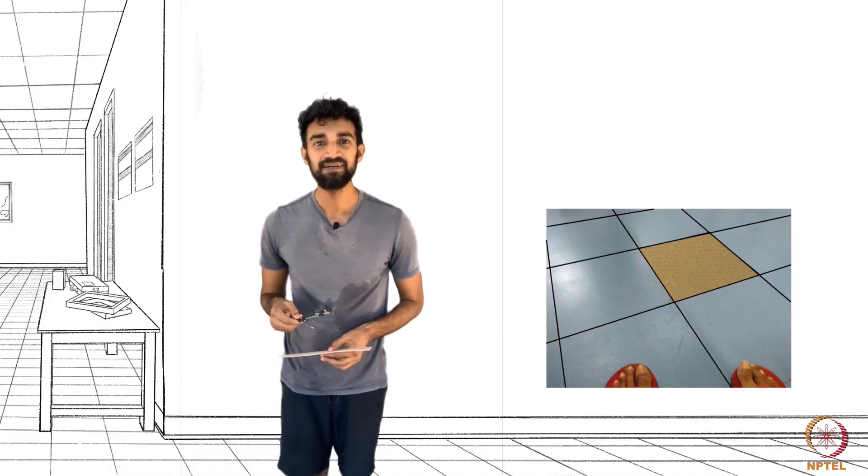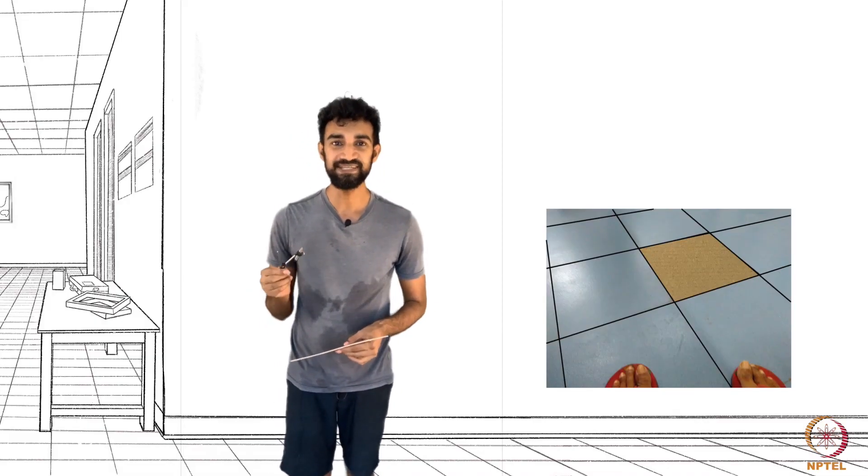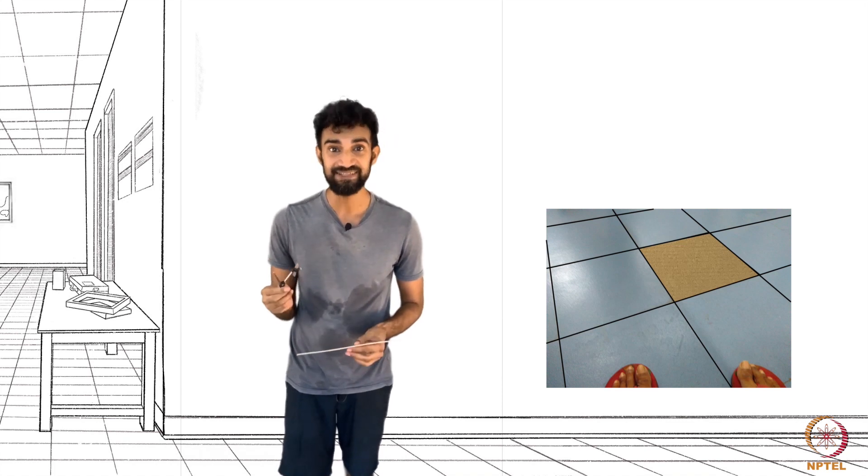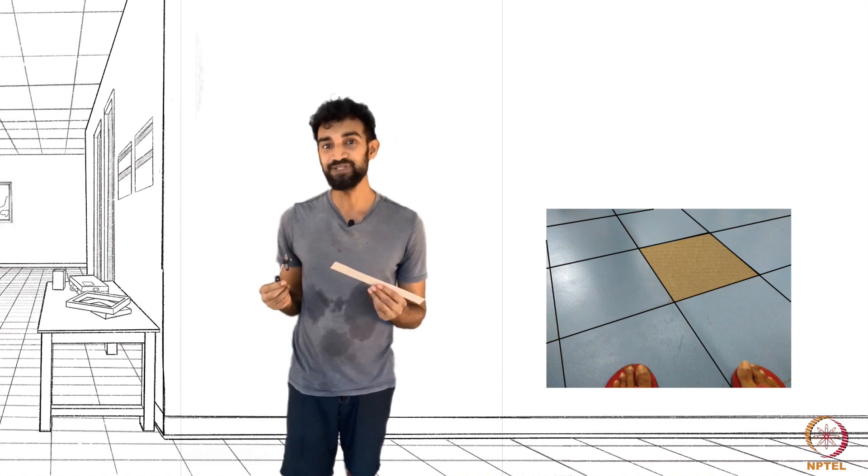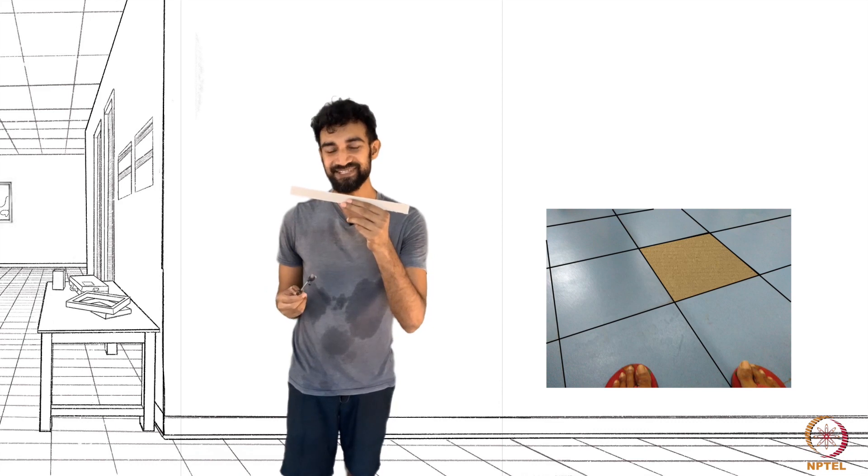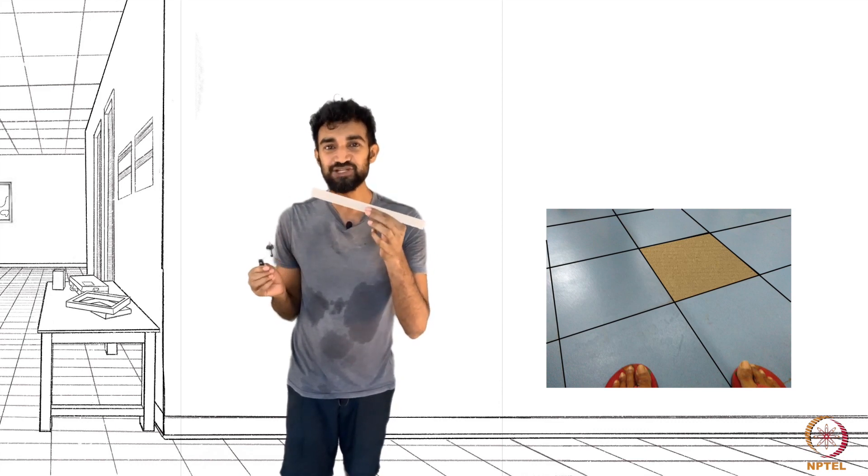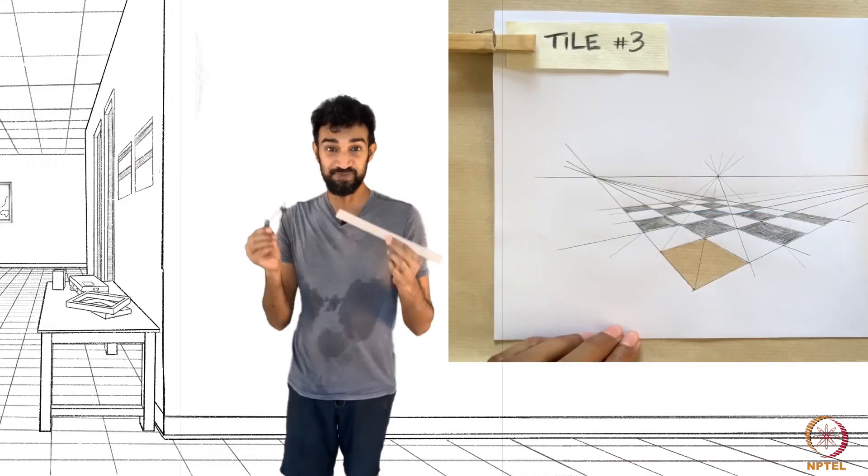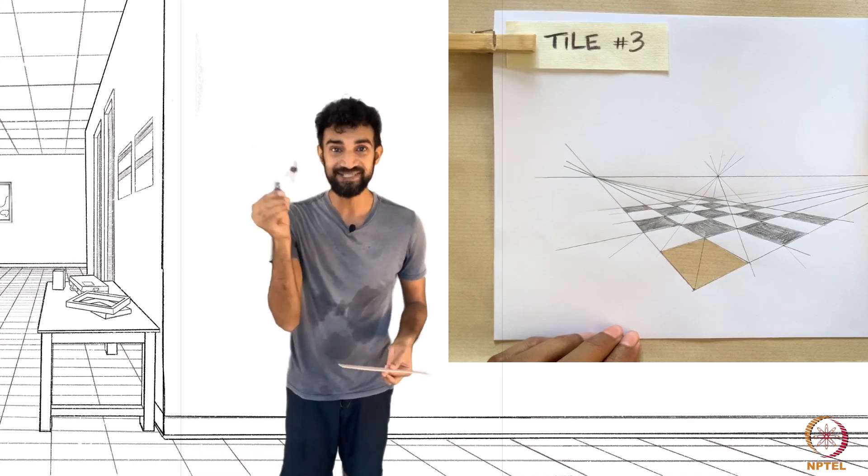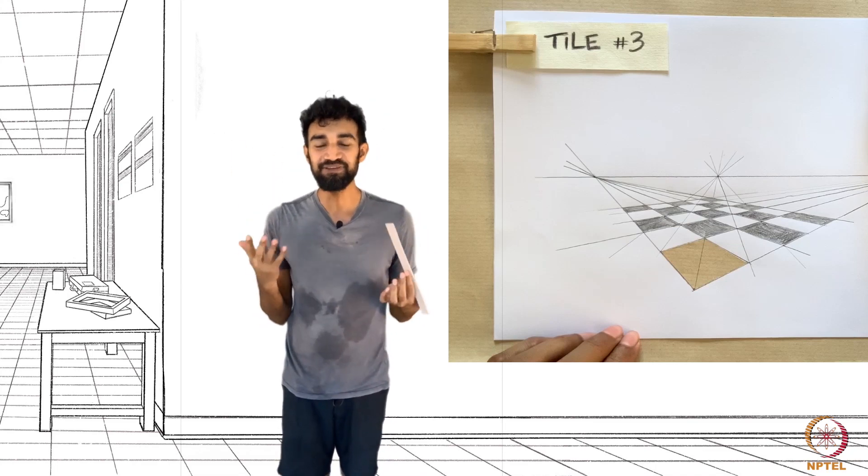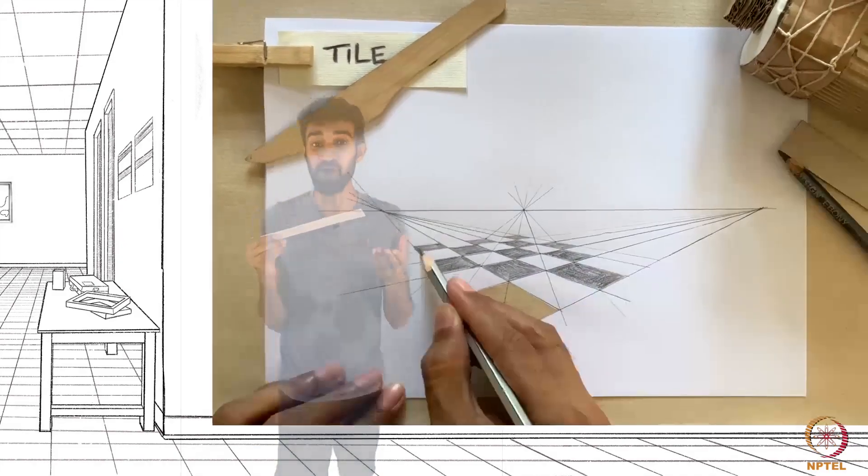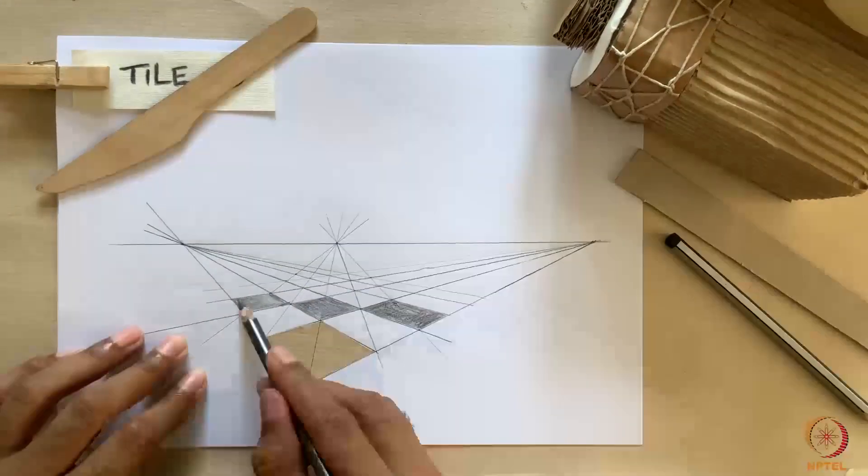What about the third tiling? Believe it or not, this one is easier than the first and second. In fact, all you need is a straight edge, because you don't need to take a single measurement to recreate it, which means we have no need for the compass. And believe it or not, it's actually quite fast to draw this picture, and even kind of fun.